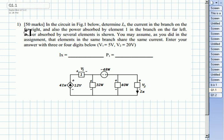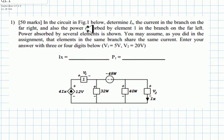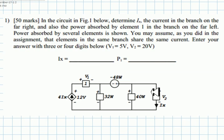Question 1 of the midterm number 1. In the circuit below, determine the current IX, the current in the branch on the far right, and also the power absorbed by element V1, this element in the branch on the far left. Power absorbed by several elements is shown: 32 watts absorbed, 48 watts delivered, and 40 watts absorbed.